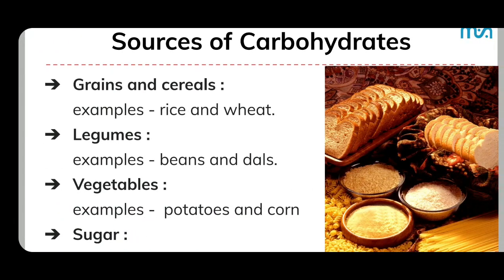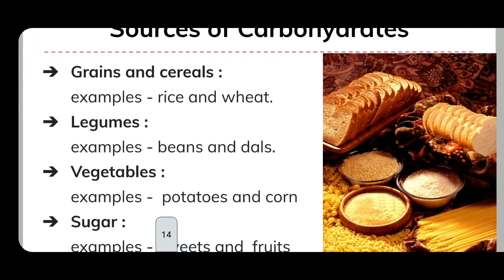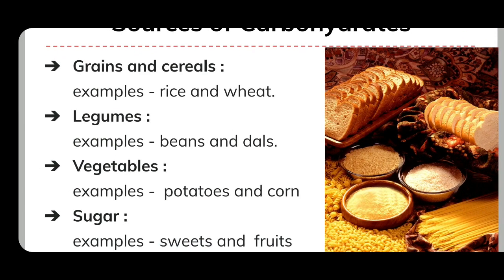Sources of carbohydrates: carbohydrates come from grains and cereals — for example, rice and wheat; legumes — for example, beans; vegetables such as potatoes and corn; sugar; and fruits.